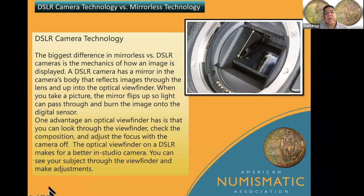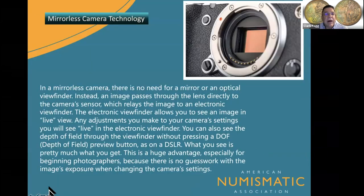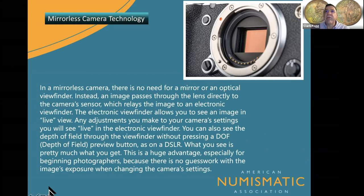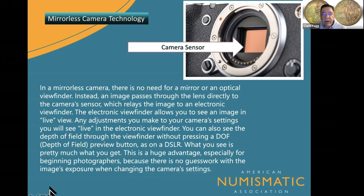It seems like the industry is going more towards mirrorless technology. The camera is a little smaller, the lenses are a little smaller, and there's really no need for that mirror to flip up. When that mirror flips up during close-up photography, it tends to vibrate the camera, so you don't get really crisp photos. You have to lock that mirror into place before you take the photo. In a mirrorless camera, there's no need for a mirror — the image passes through the lens and directly onto the camera sensor.